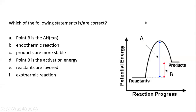Before we begin the lecture, we're going to start off with an example problem from the previous lecture. We have an energy diagram and want to know which of the following statements are correct. Statement A says point B is the delta H of reaction — point B is the difference in energy between the reactants and products. This is correct.